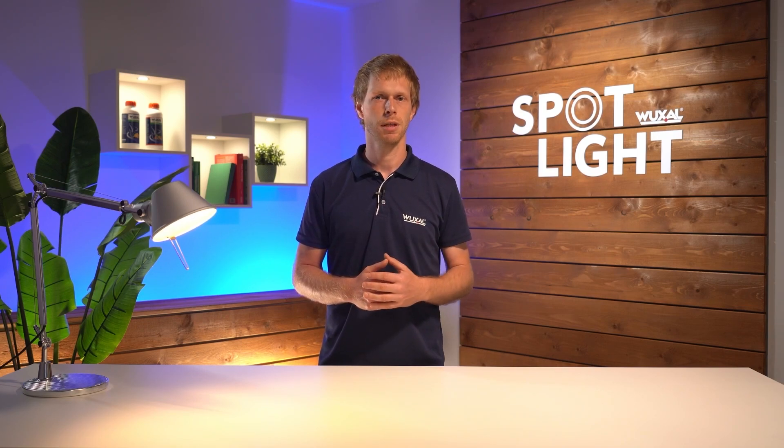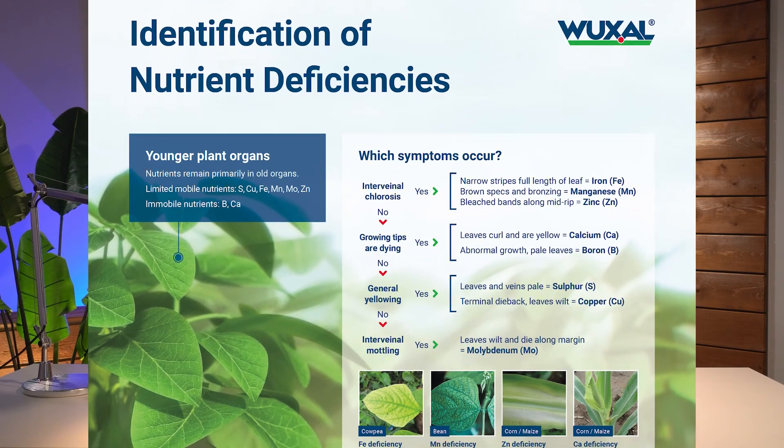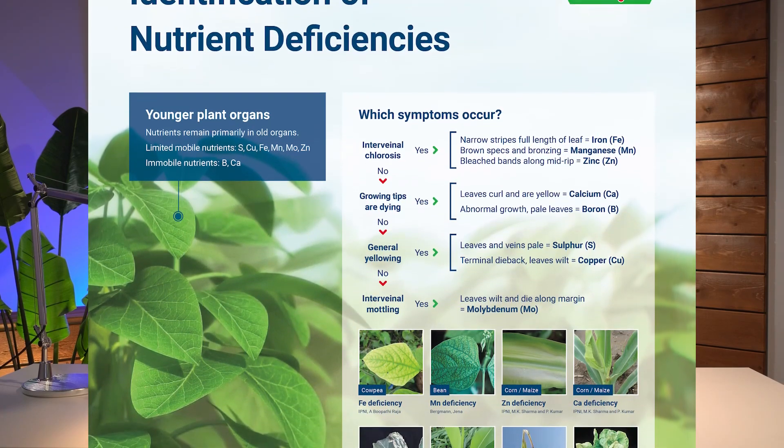A nutrient deficiency cannot be identified solely by where it appears first. To assure which nutrient deficiency your plant is suffering from, we need to look at other parameters such as the type of discoloration or even the deformation of plant parts. We have created a poster for you to easily identify your nutrient deficiency step by step. You can find this poster in our news on wuxal.com, and if you are watching this video on YouTube, you can follow the link in the video description.